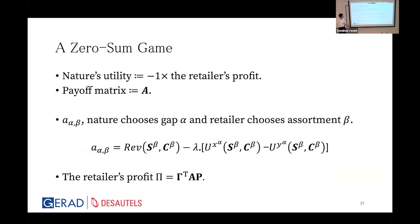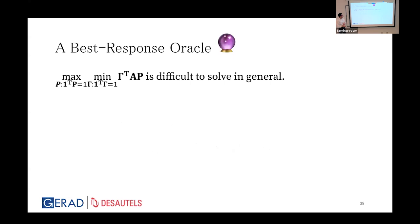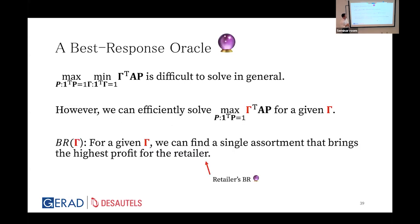We form a payoff matrix A where element A(α,β) corresponds to Nature focusing on gap α and the retailer showing assortment β. The retailer's problem is to maximize gamma^T * A * P. The key insight is: if we fix gamma, we know the optimal P — the single assortment that maximizes gamma^T * A * P. This is what we call the retailer's best response oracle.